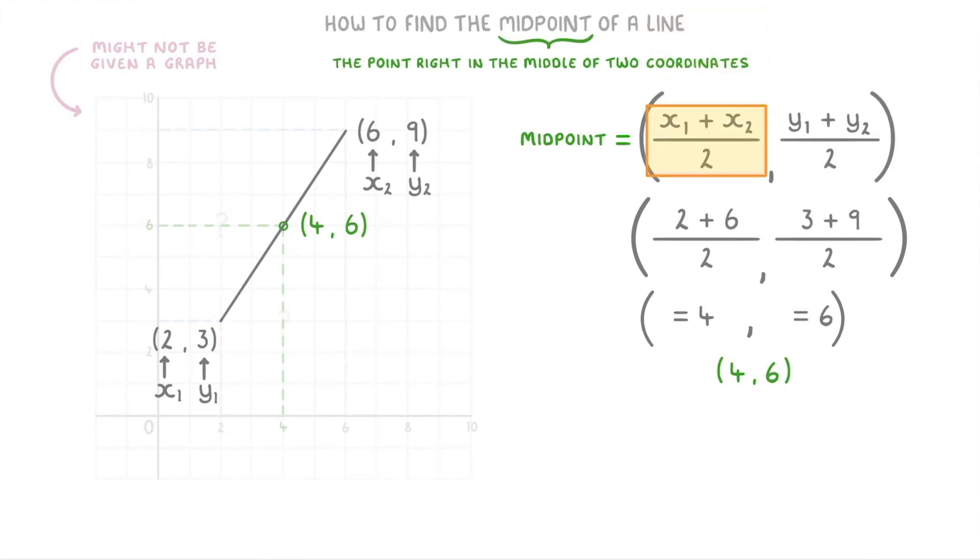So this left part is basically a mini-formula to work out the x-coordinate of the midpoint by finding the average of our x-values. And this right part is a mini-formula to work out the y-coordinate by finding the average of our y-values. So this is why we just plug everything straight in, and when we simplify it, we end up with the coordinate that we need.